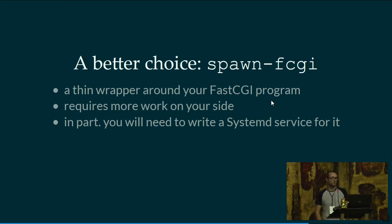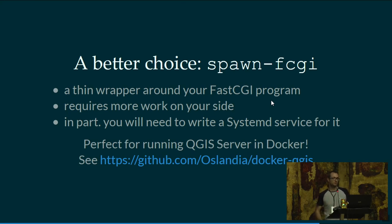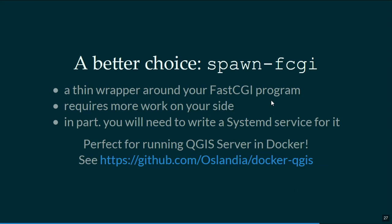There is a better choice: the spawn-fcgi package application. It's a thin wrapper around your FastCGI program and will take care of creating the communication socket between your web server and your FastCGI program. It's also packaged in your distribution, but you will have to write a systemd service for it to be started at each reboot. So it's a bit more work on your side. It's also a very good tool if you want to run QGIS server in Docker, which I'll come back to at the end of the talk.